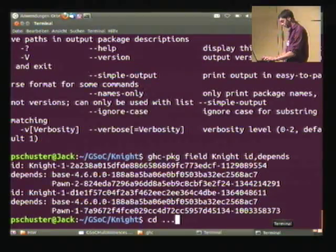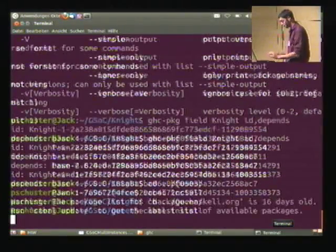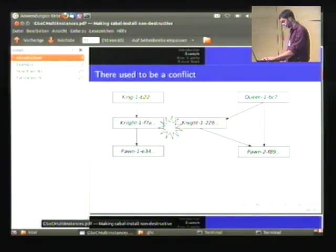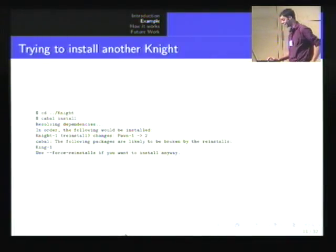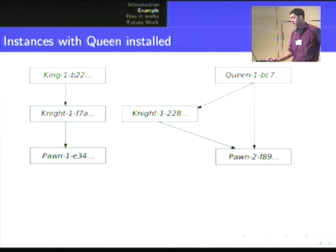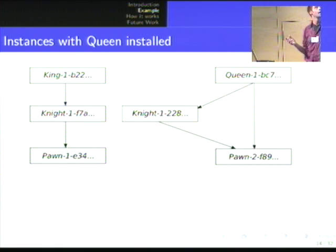And because this means we can now install the queen package. Yay! We have two instances of knight and can install the king package — that's cool. Now, what happens if I try to install another instance of the king package? Because it can depend on any instance of knight — which one is it supposed to choose?